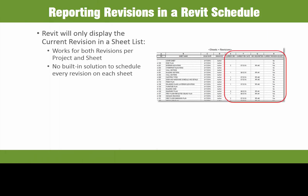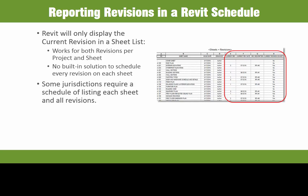One of the issues with reporting revision information in Revit is that a Revit schedule will only report the most current revision on each sheet, not all of the revisions on each sheet. There is no built-in solution to schedule every revision on each sheet. Some owners and jurisdictions require a schedule that reports each sheet and every revision on those sheets, so many people have created dummy schedules in Revit utilizing shared parameters or have manually entered this information into an Excel spreadsheet, which is error-prone and lacks coordination.